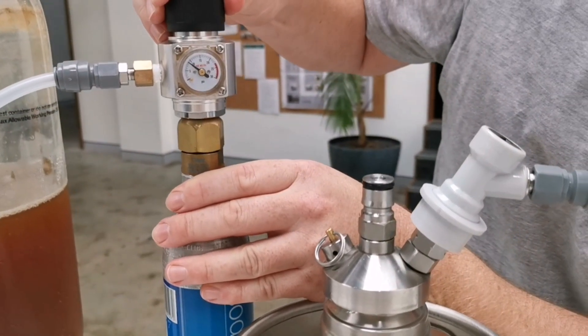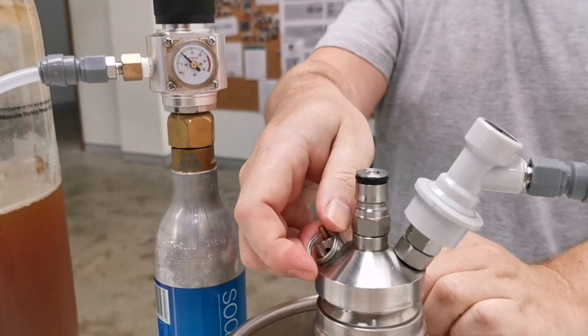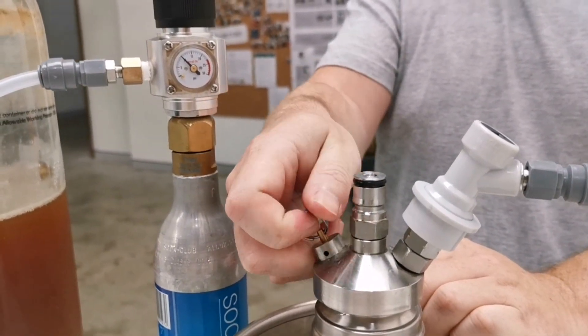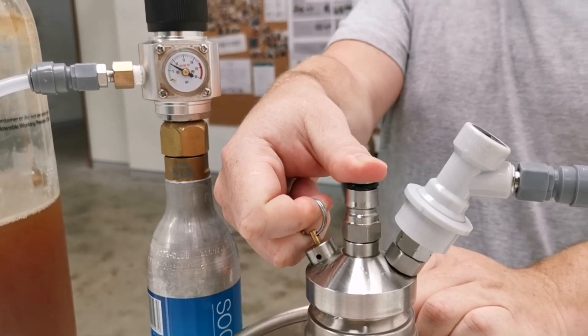After sanitizing we want to flush our small empty keg out with CO2 and then leave it pressurized at the same pressure as our large keg, in this case 10 psi.